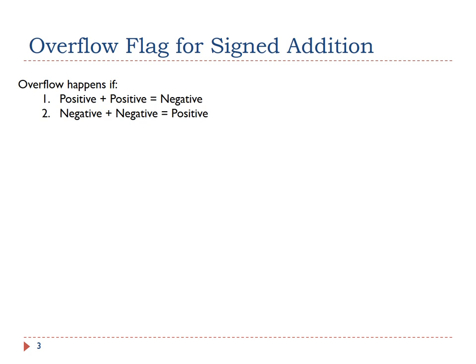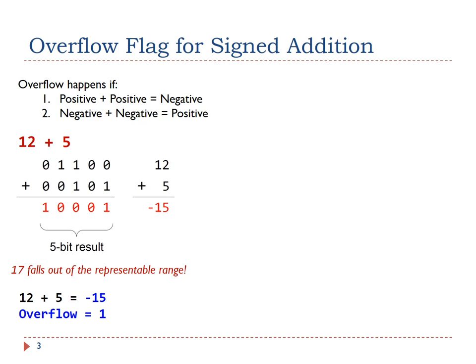This shows an example of the first scenario, in which overflow is generated when the sum of two positive numbers is negative. Suppose we are adding 12 and 5.